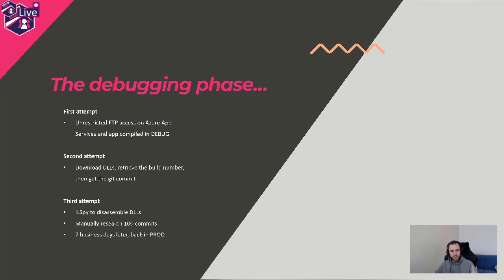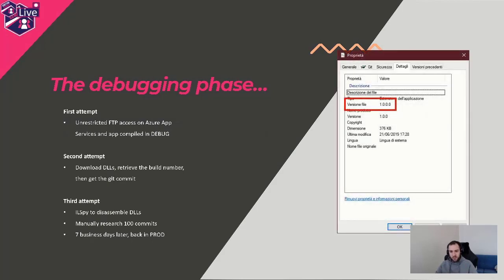We looked at a second attempt and said, let's try to download all the DLLs that we published, retrieve the build number, trace it in the git history using the git tag and git commit, and try to reproduce it locally. The screenshot is in Italian but it's a real screenshot from back then — when we right-clicked on the DLL, we noticed the version was set to 1.0.0. We didn't have any versioning — this was another interesting point we'd address later.